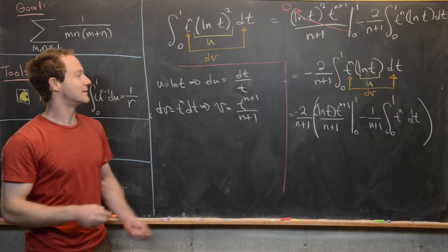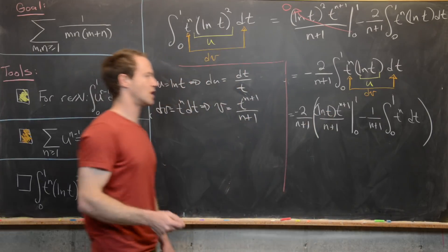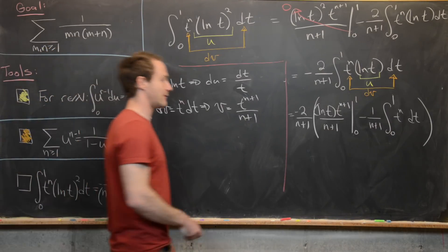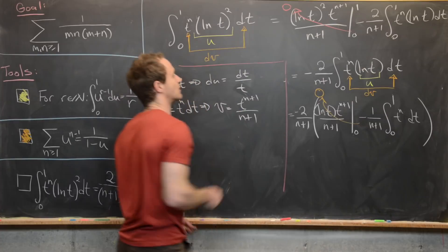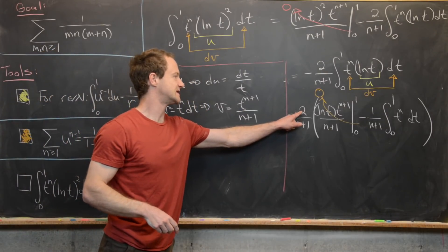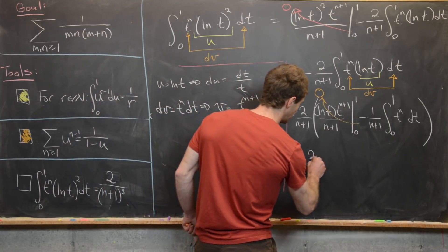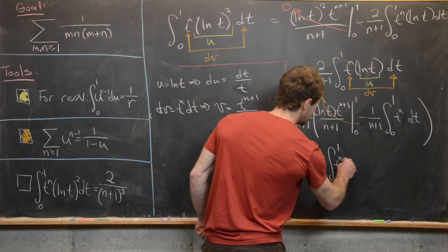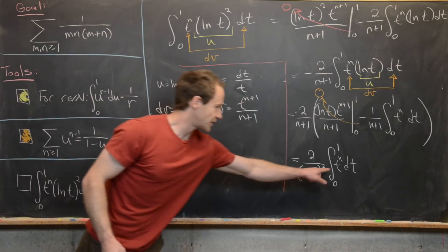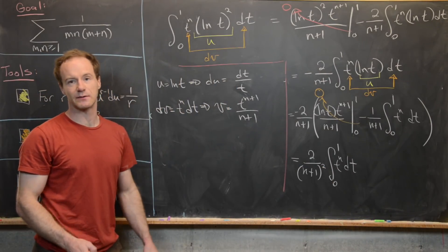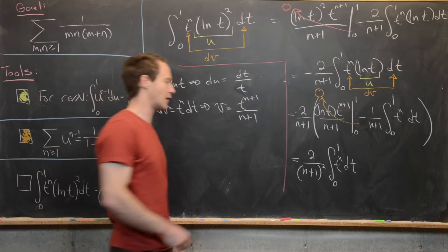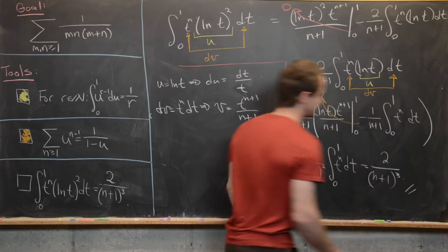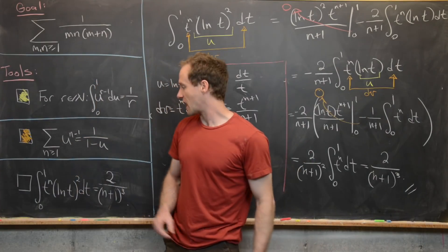Just as before, plugging 1 into the natural log gives 0, and plugging 0 requires L'Hôpital's rule in the limit, which also gives 0. So that boundary term vanishes. The two minus signs cancel, leaving us with 2 over n plus 1 quantity squared times the integral from 0 to 1 of t to the n dt. The antiderivative gives t to the n plus 1 over n plus 1, evaluated at 1, yielding 2 over n plus 1 quantity cubed — exactly what we wanted to show.